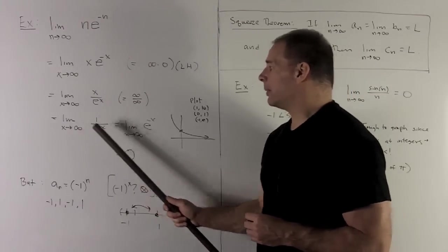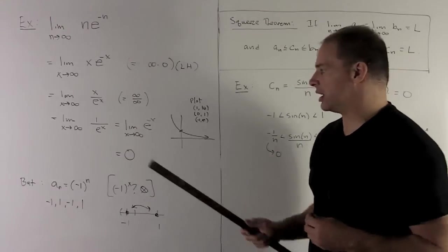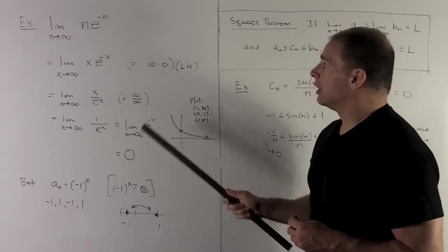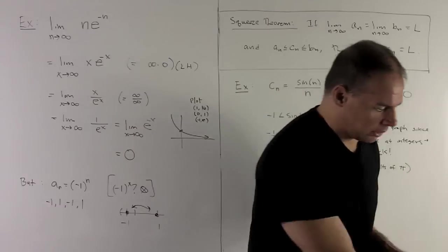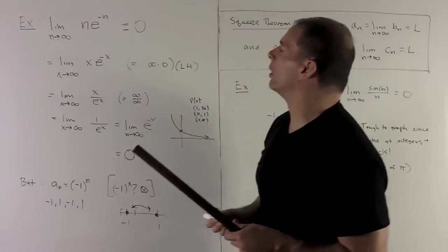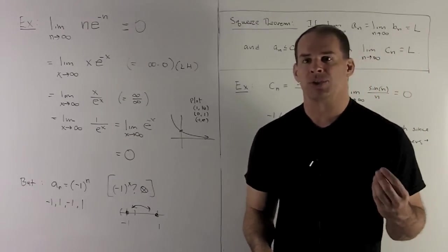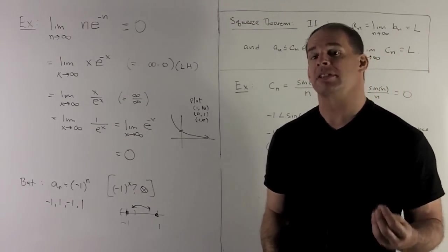Now, when I do the limit, we're back to limit as x goes to infinity of e to the minus x. We just saw that that's 0. So that's going to mean the answer to the original problem is 0. So that's how I use this interchange from sequences to functions.